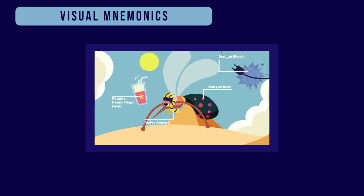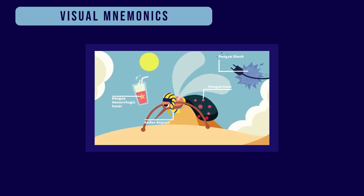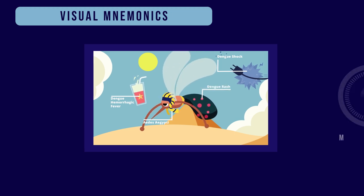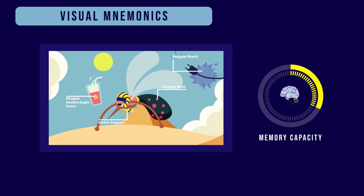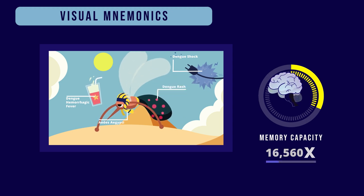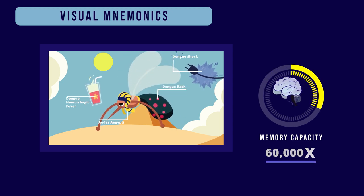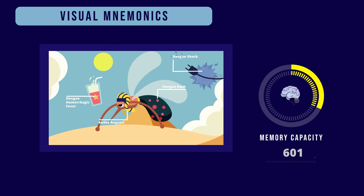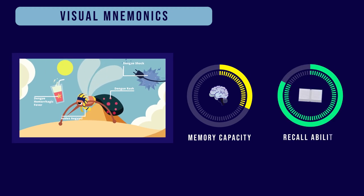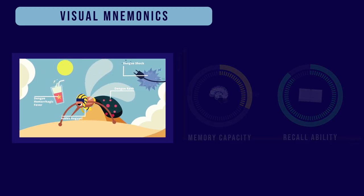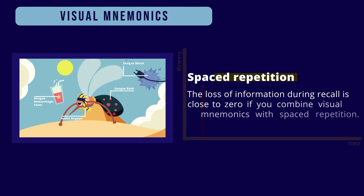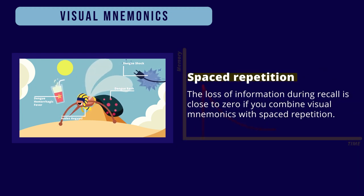Let me show you how I use visual mnemonics, or picture mnemonics, to solve this problem. Visual mnemonics use up only a small memory capacity. Our brain processes visual stimulation 60,000 times faster than text information, making it the fastest form of information to recall. The loss of information during recall is close to zero if you combine visual mnemonics with spaced repetition.